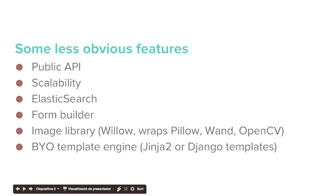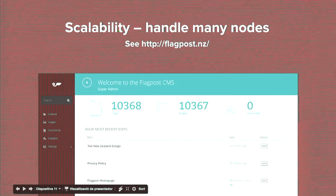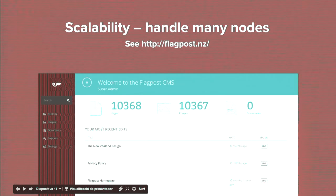I wouldn't recommend Wagtail for really small sites — you can use Lector or Flask for that — but if you need a heavy CMS used by several users simultaneously, with a good workflow for content editors and a good user experience, I'd definitely recommend Wagtail. From a development point of view it's really easy to plug with Elasticsearch, you can plug in your own template engine — Django templates or Jinja — and it comes with a form builder, excellent documentation, and an API package using the Django REST framework, so you can share content across any other application.